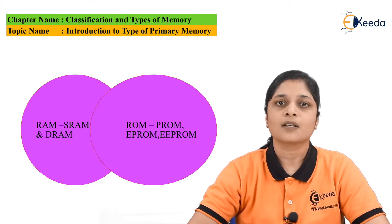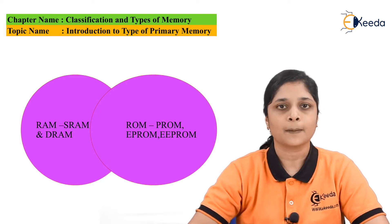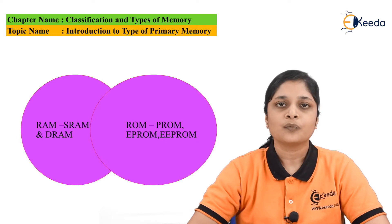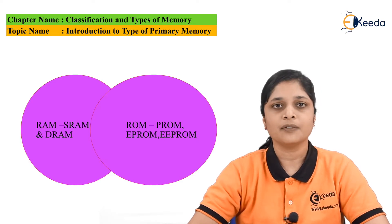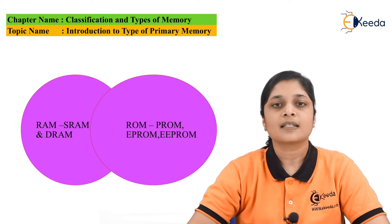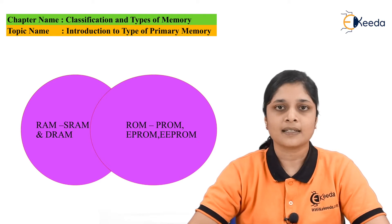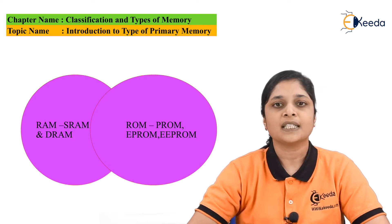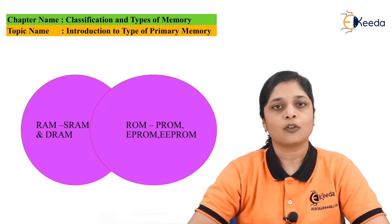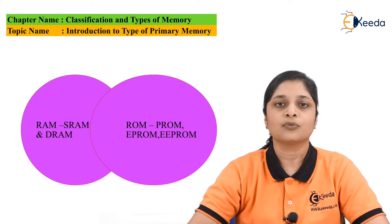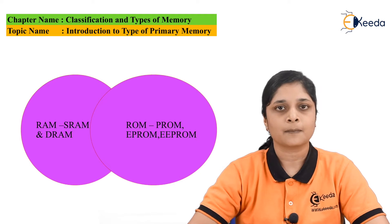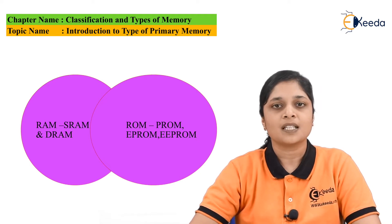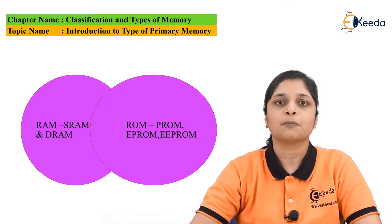Now RAM is again divided into two types: the first is Static RAM, that is SRAM, and the second is Dynamic RAM, that is DRAM. After that, ROM is again divided into three types. The first type is PROM, that is Programmable Read-Only Memory.